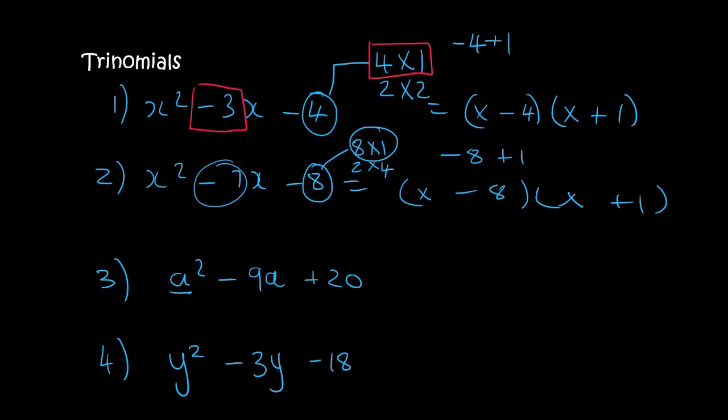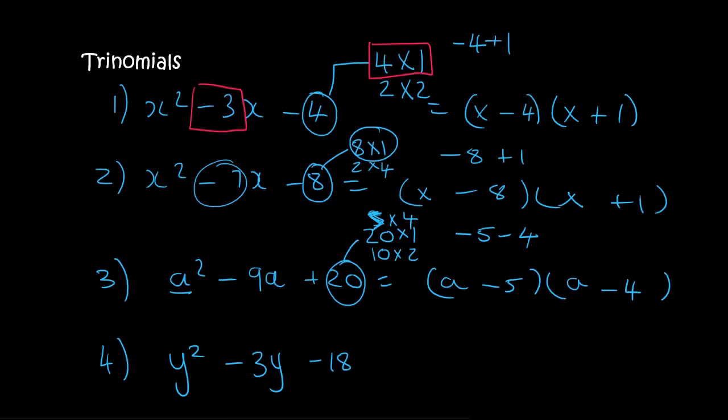Here we're using a which is perfectly fine. We look at the number 20, and 20 is the same as 20 times 1, 10 times 2, or 5 times 4. We know that 5 and 4 could make minus 9 by saying minus 5 minus 4. So we open up our two brackets and say a and a, minus 5, minus 4. Notice that with trinomials you could have a minus and a plus, a minus and a minus—any combination.